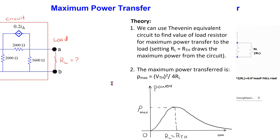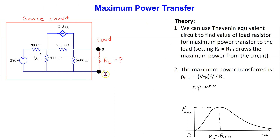Recall from circuit theory that when the load resistance RL is zero ohm, the power dissipated in the load is zero as the voltage across the load is zero. When the load resistance RL has an infinite ohm value, then the power dissipated is also zero as the current in the load is zero.